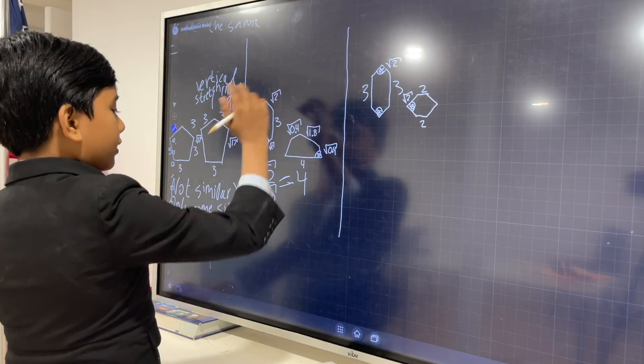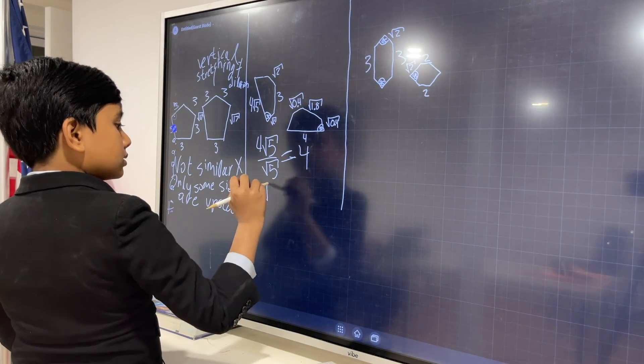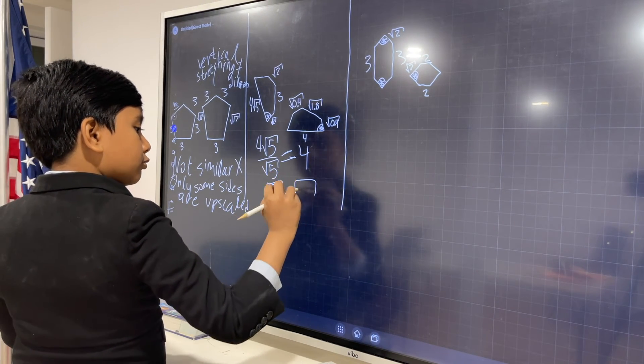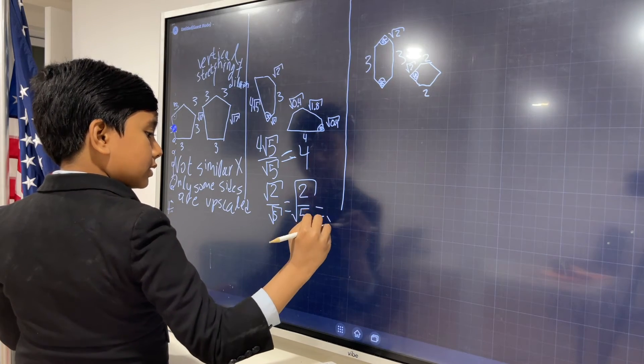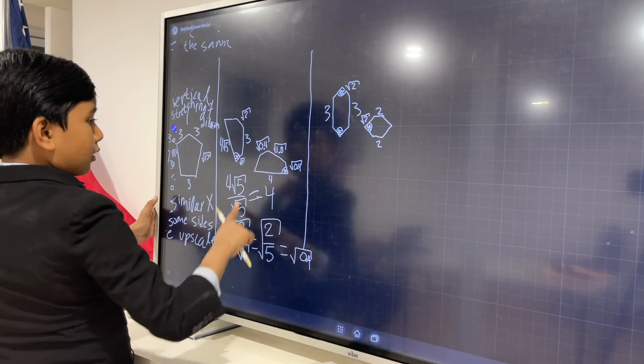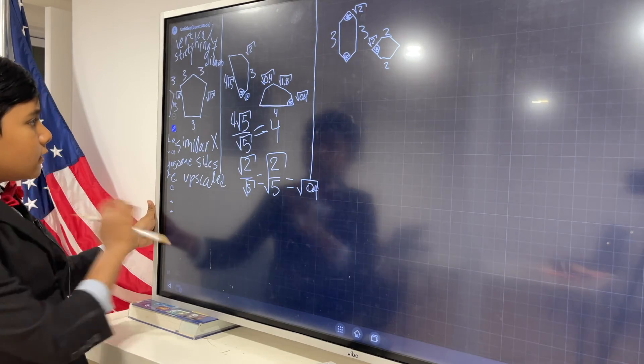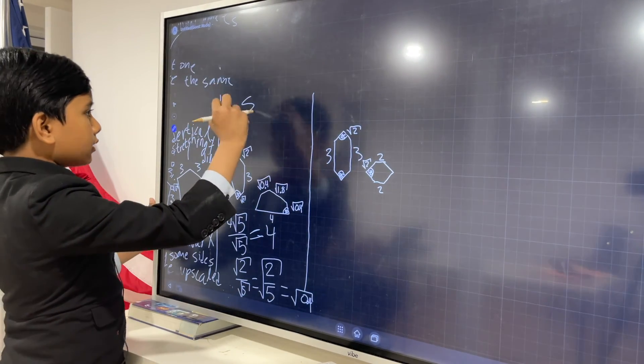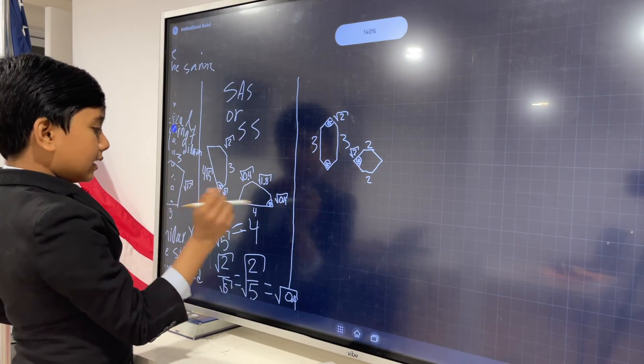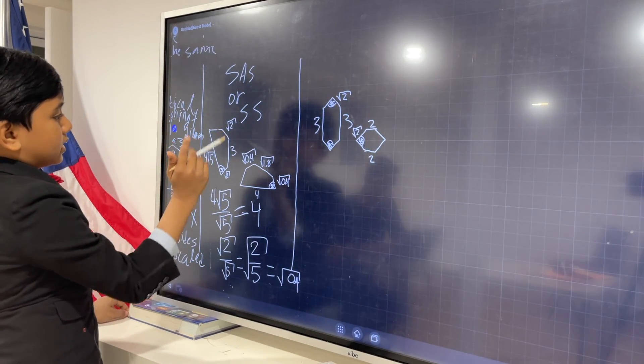So if we divide one of these sides by root 5, we get the corresponding side in the smaller figure. So like for example, root 2 over root 5 is root 2 over 5, which is root 0.4. So yes, that's one. What about 3? Well this could fall under either SAS or because we're using the, because this angle isn't changing, and we're also using all the sides besides one.